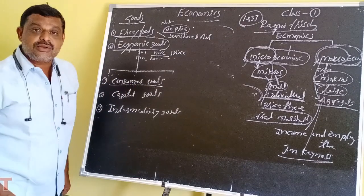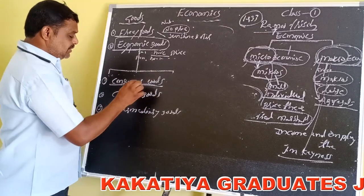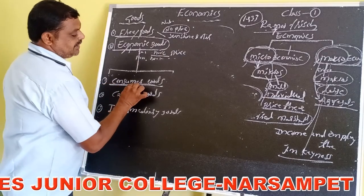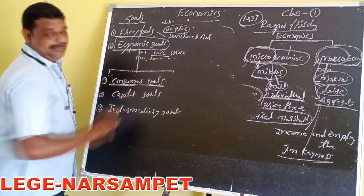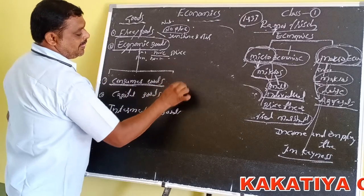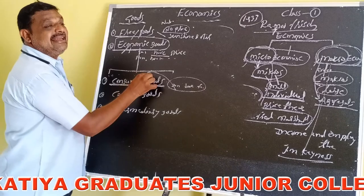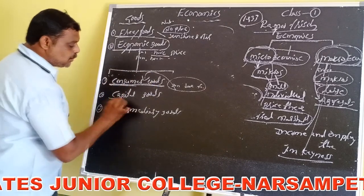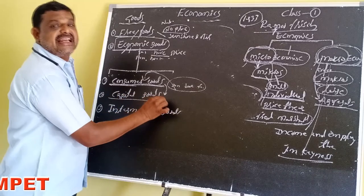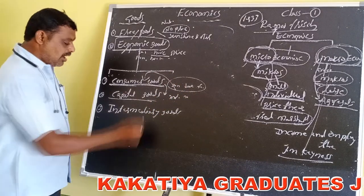Consumer goods are goods which can satisfy human wants directly. Capital goods, on the other hand, satisfy wants indirectly — for example, machinery and equipment. These are capital goods.